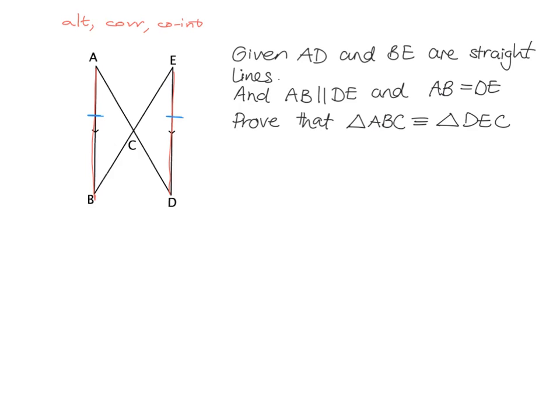We need to prove these two triangles are congruent. We know our four cases: side-side-side, side-angle-side, any two angles and a side, or right angle-hypotenuse-side. There's nothing in this diagram suggesting a right angle — no rectangles or squares — so we're probably not going to use RHS. That's most likely not the case of congruency we'll use here.